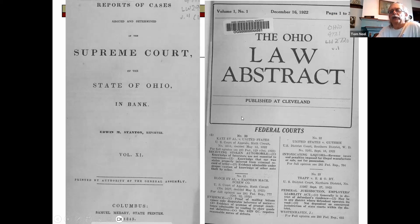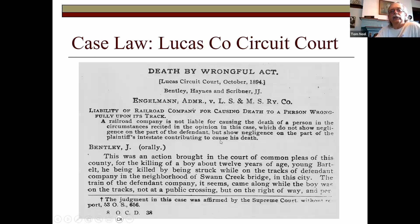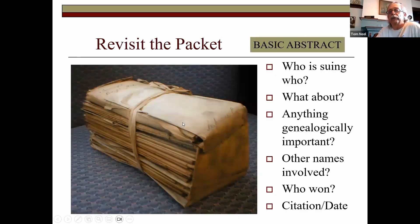All kinds of laws are published at the state level, so look at the various Supreme Court State of Ohio law abstract series — you can sometimes find ancestors in there. They publish volumes every year. Here's a case that came in 1828 from the Common Pleas Court of Sandusky County involving a guardianship: Mary Perry was a minor, the court assigned her a guardian, but when she came of age she wanted a different guardian. There's land involved — they're always fighting over money. In Lucas County, a case involves a young child killed and struck by a train near Swan Creek Bridge, arguing whether it was a public crossing. If that's your ancestor or family member, that is important.